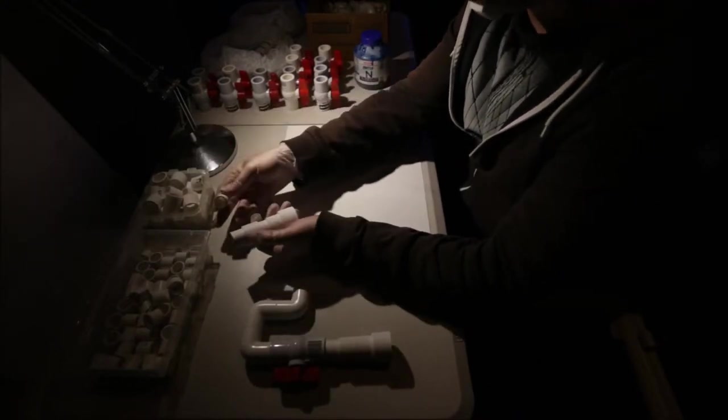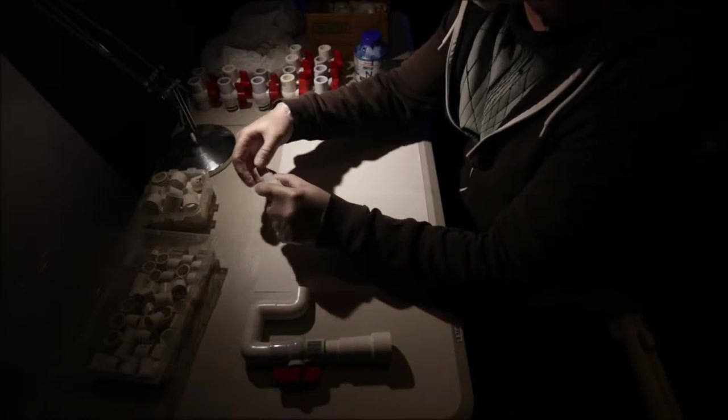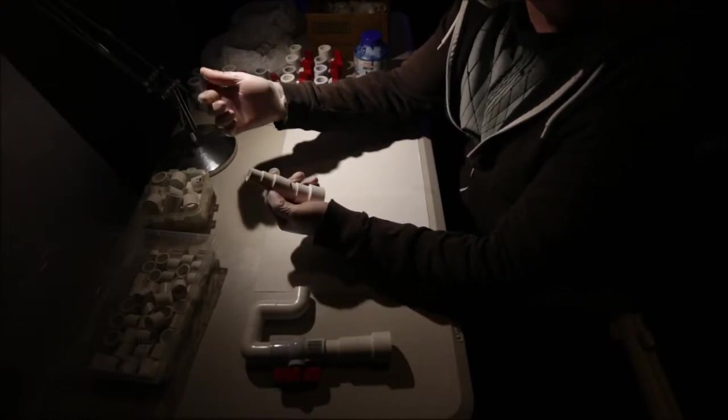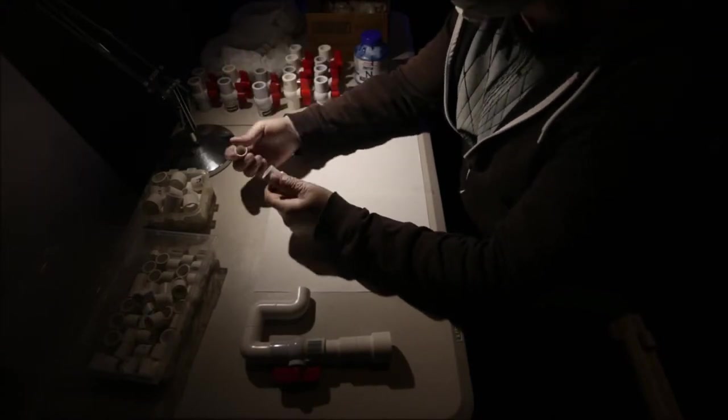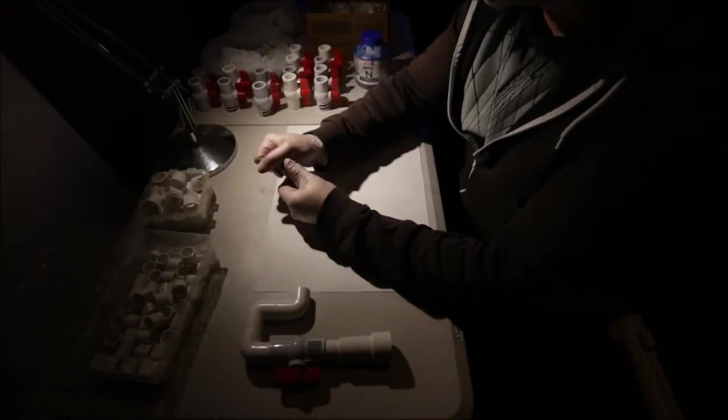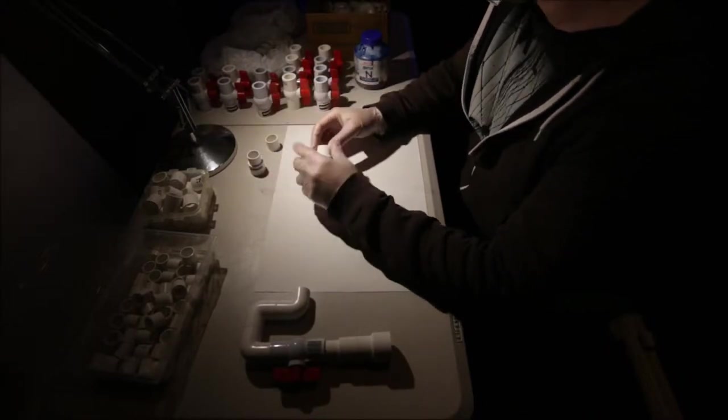Then this coupling is 20 mil to 15 mil coupling, and that will go onto that. And then from there we get a 15 mil cut—this pipe was a meter long and I've cut it into two centimeter sections. Pop that in there and then we put the tap on.